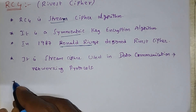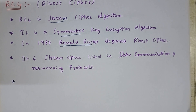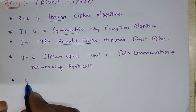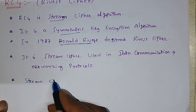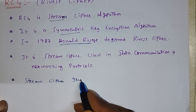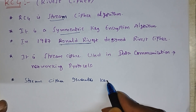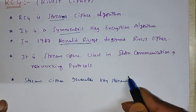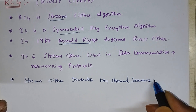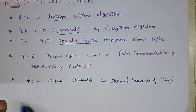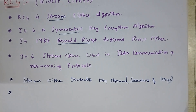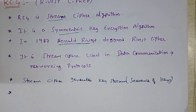In stream cipher, it generates a sequence of keys. The RC4 stream cipher generates a key stream. What is the meaning of key stream? Key stream is nothing but a sequence of keys. In the encryption algorithm, it performs by combining the key stream with the plain text.